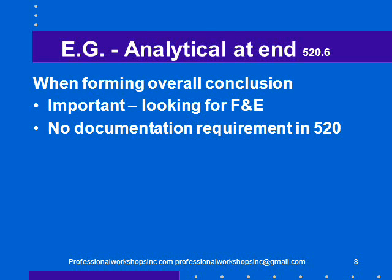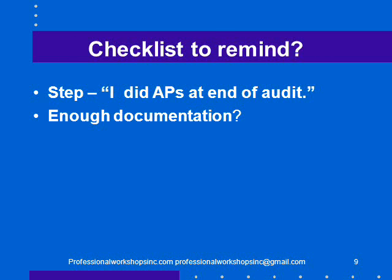For instance, we are required to do analytical procedures at the end of the audit — we are, among other things, looking for fraud and error and forming an overall conclusion — but there's no specific requirement that tells us what or how we have to document that. So is a checklist step enough? Checklist steps remind us of all the things that we shall do to help make sure we don't forget anything, and the step might say 'I did analytical procedures at the end of the audit.' The question is: is that enough documentation?